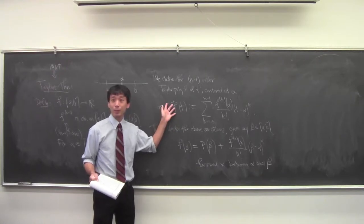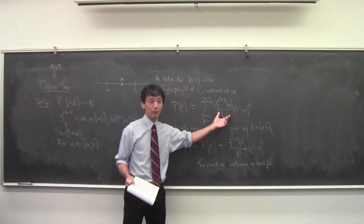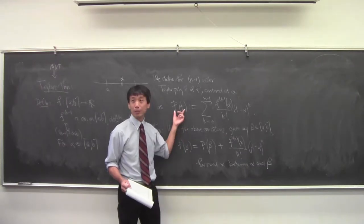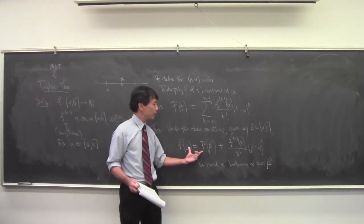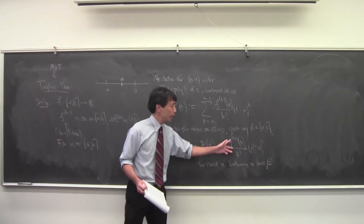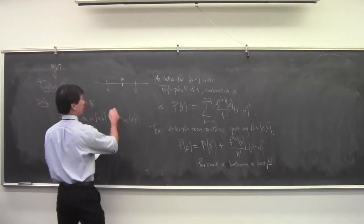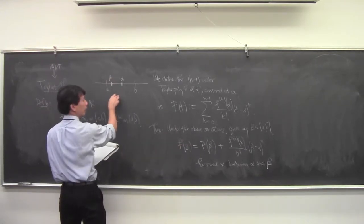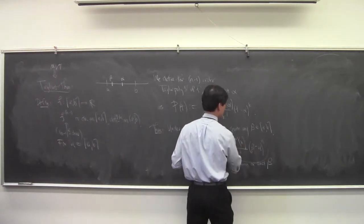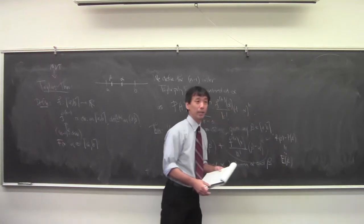This is the Taylor polynomial of degree n−1. It approximates your function with polynomials. The theorem says the difference between your function and the polynomial — the error — is controlled by the n-th derivative of your function, evaluated at some point x between alpha and beta.